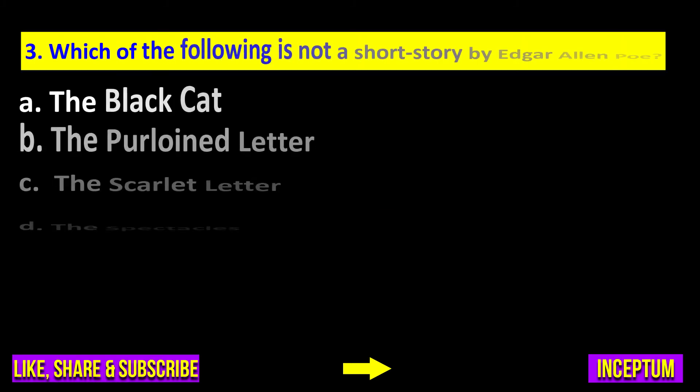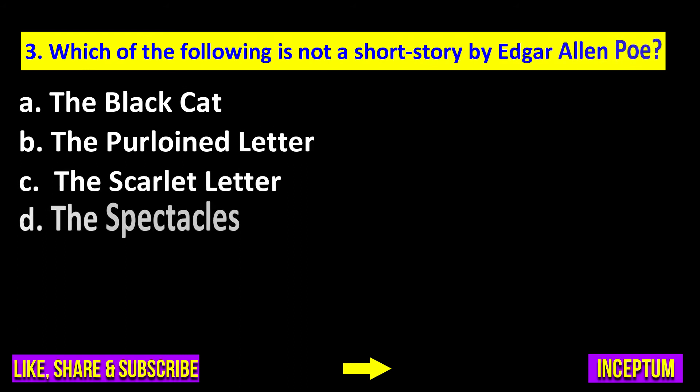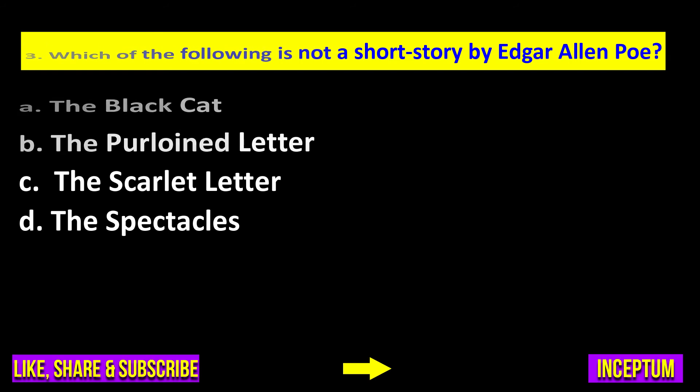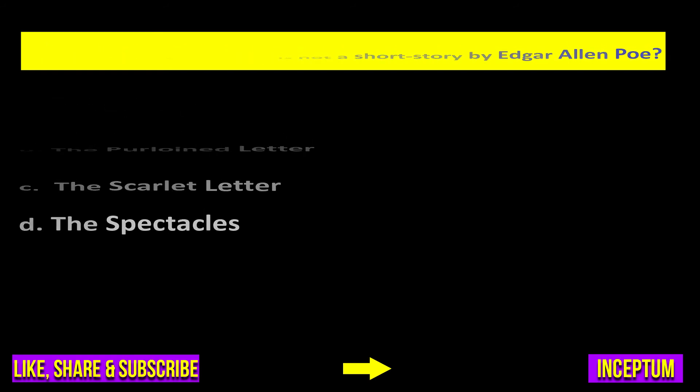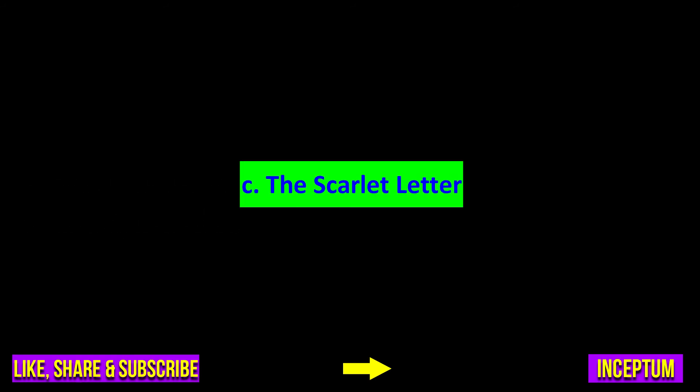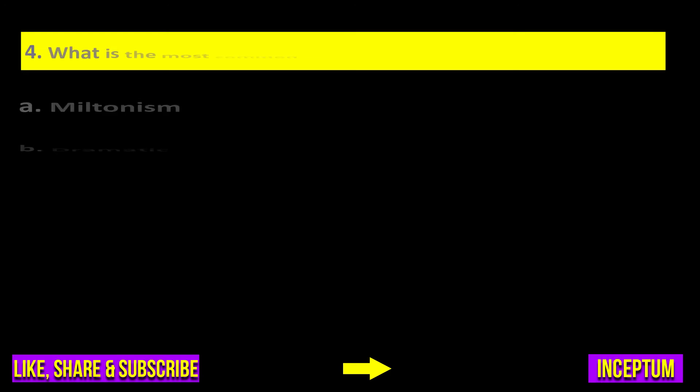Question number three: Which of the following is not a short story by Edgar Allan Poe? The Black Cat, The Purloined Letter, The Scarlet Letter, or The Spectacles? The right answer is option C: The Scarlet Letter.